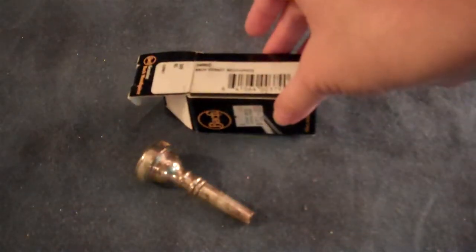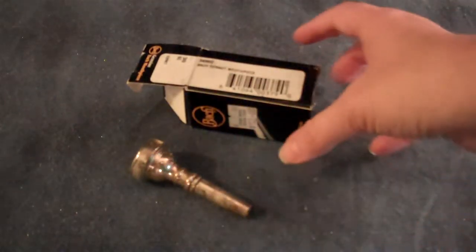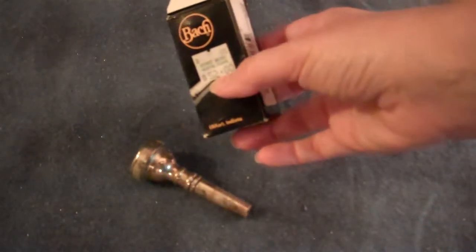Again, it is for a Coronet, not a trumpet. So this is a Coronet mouthpiece, 6C, retails for $52.